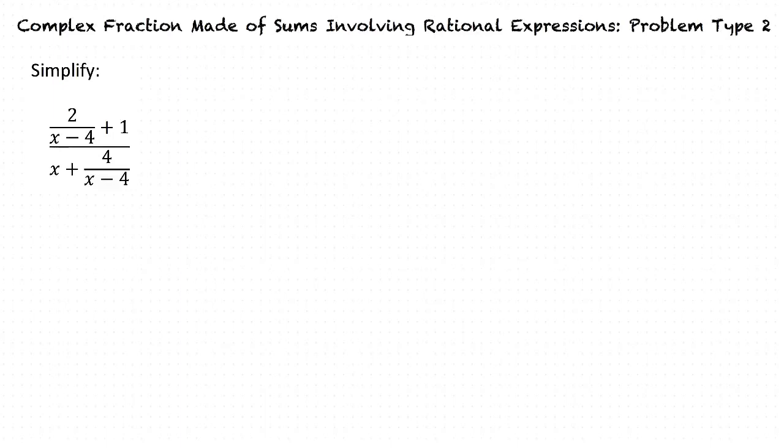We know that our complex fraction contains 2 over x minus 4 and 4 over x minus 4. The least common denominator of all the fractions within this complex fraction is x minus 4.